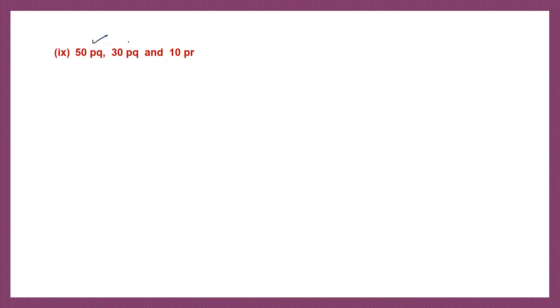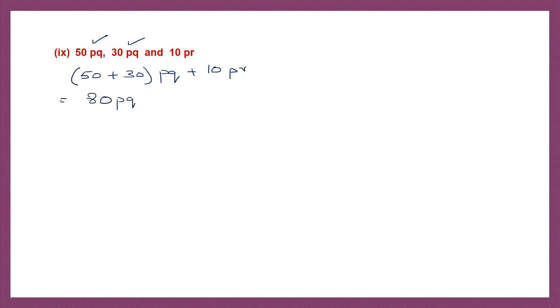Next question: 50pq, 30pq, and 10pr. So we can add the like terms — these two are like terms. So 50 plus 30pq plus 10pr. Let's add: 50 plus 30 is 80pq plus 10pr.